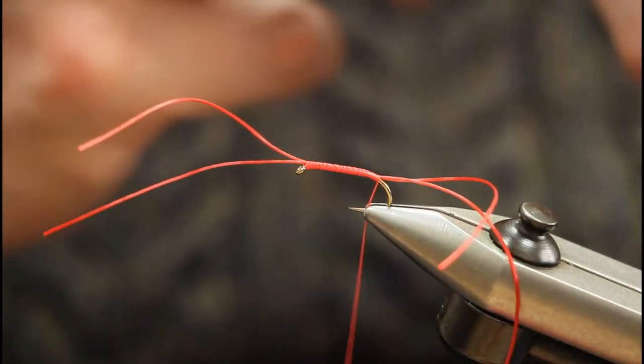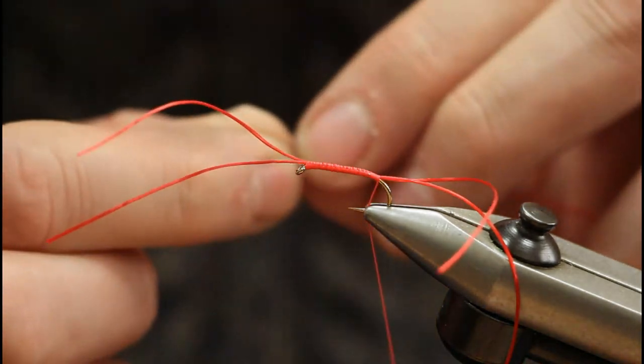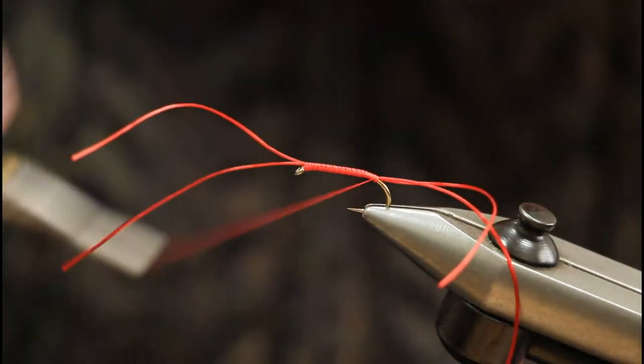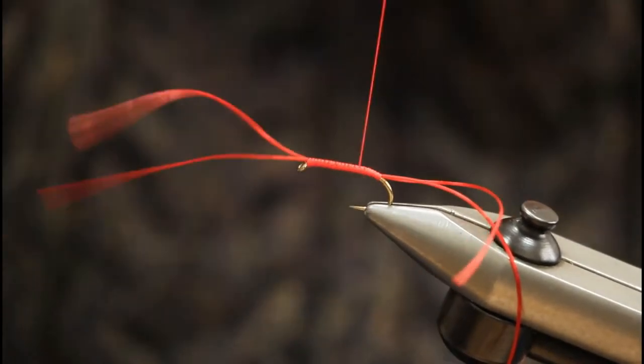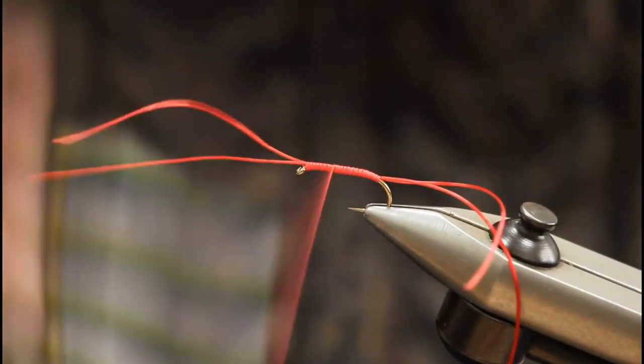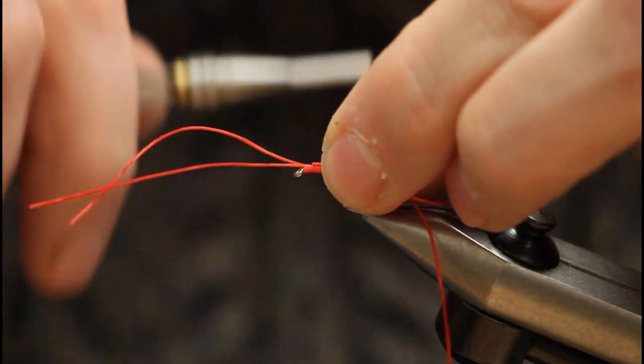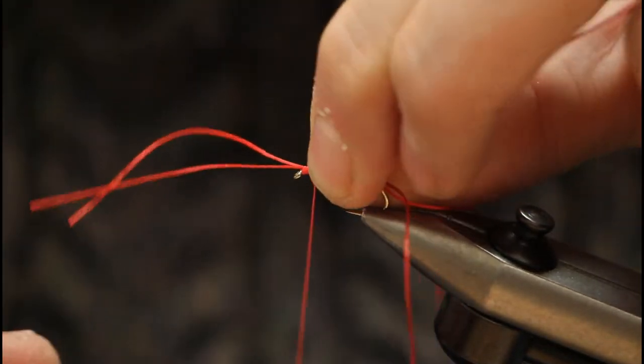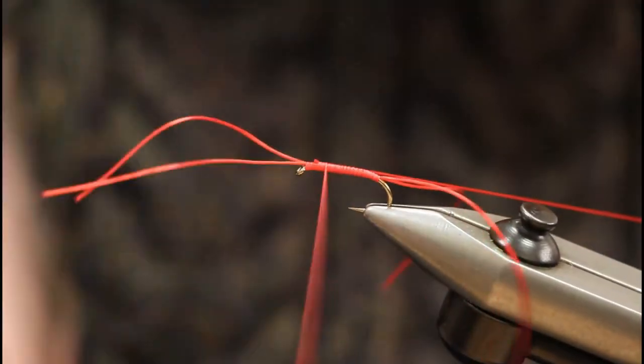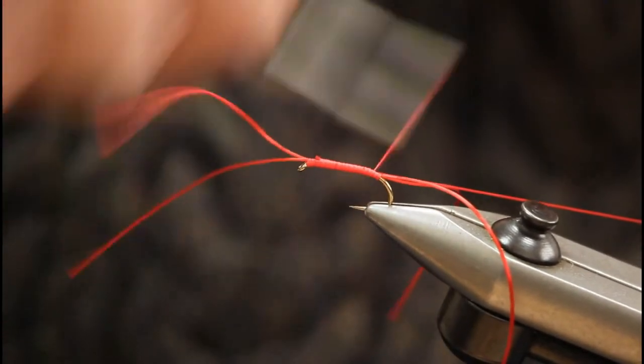The rib for the fly is just another strand of flexi-floss. I'll run this up in touching turns or semi-touching turns and just catch in our piece for the rib, then run this back to the rear of the fly again.